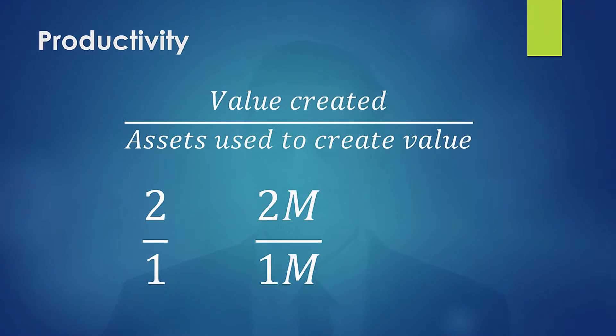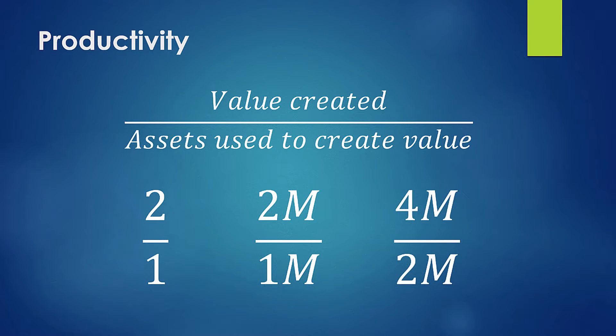If you had a business where you had one million dollars in assets and you generated two million dollars in profits, and let's say you went out and found an investor to invest another million dollars — well, if you know your productivity is two to one, now you're starting with two million dollars in assets and you know it's going to turn into four million dollars. I hope you can see how powerful this can be.